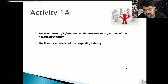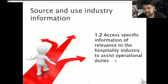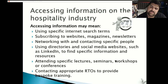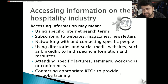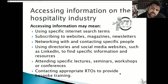When you're ready, come back and we'll move on to 1.2: access specific information of relevance to the hospitality industry to assist operational duties. Accessing information on the hospitality industry can be done by using specific internet search terms, subscribing to websites, magazines and newsletters, networking with and contacting specific people, using directories and social media websites such as LinkedIn, Facebook, and Instagram. You can also use Yelp, Google, attend specific lectures, seminars, workshops or conferences, or contact appropriate registered training organizations to provide bespoke training catered to your sector.